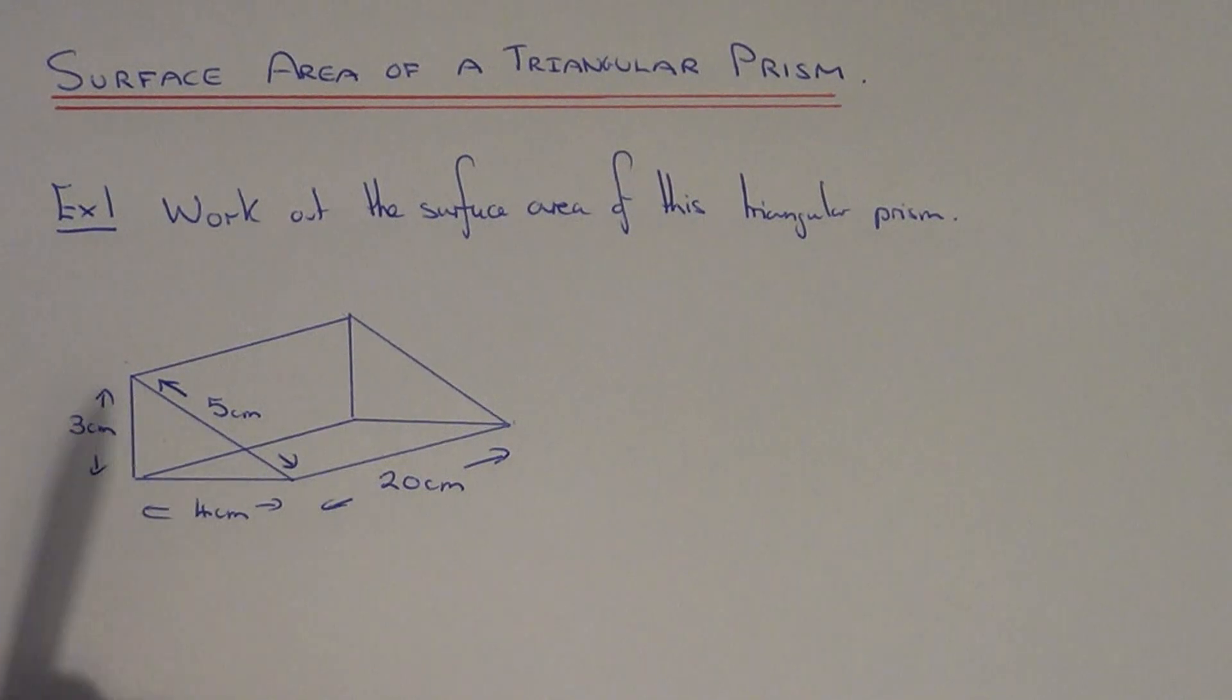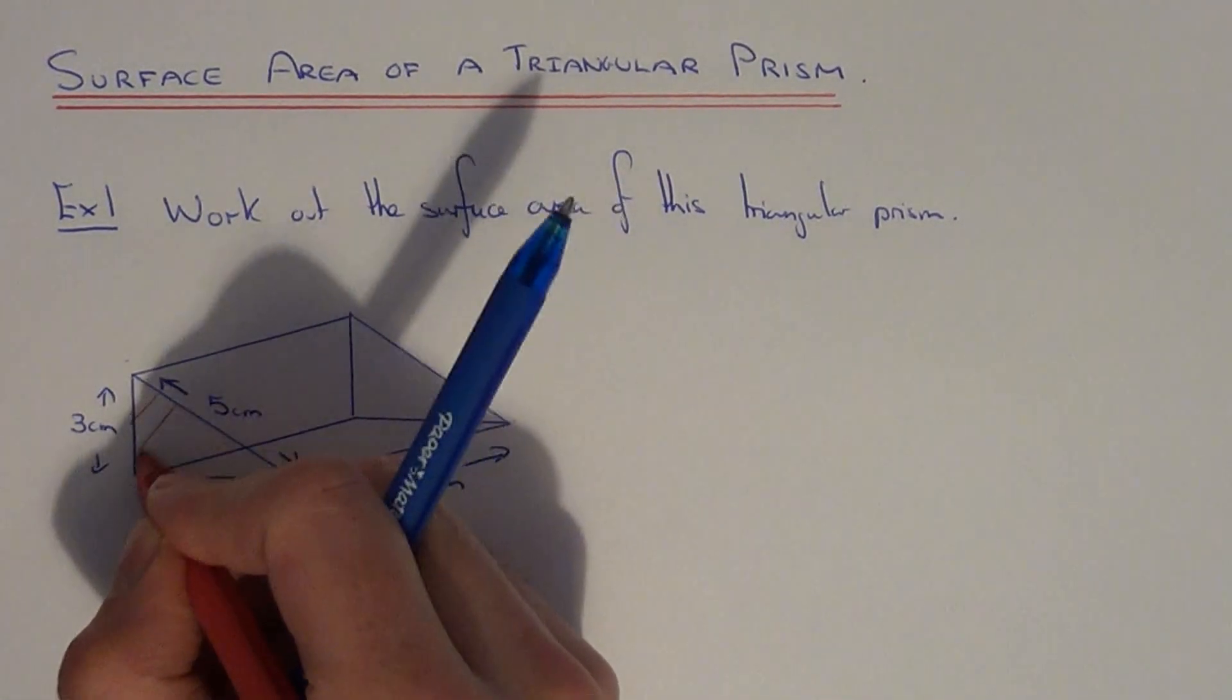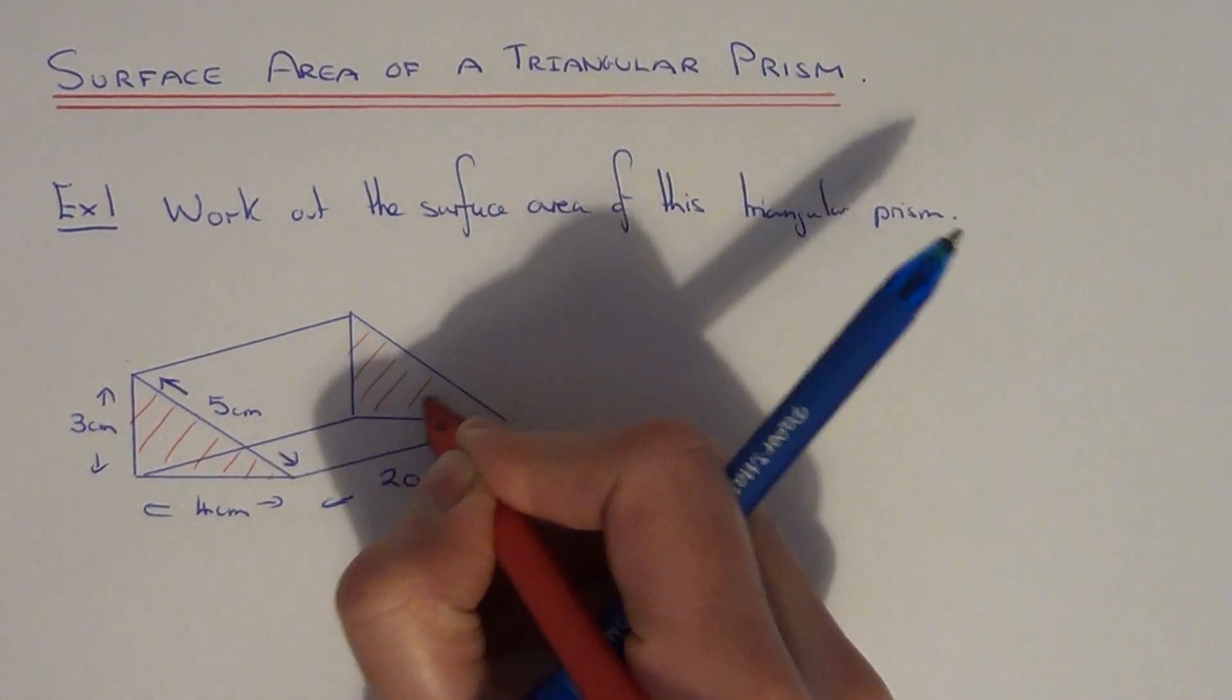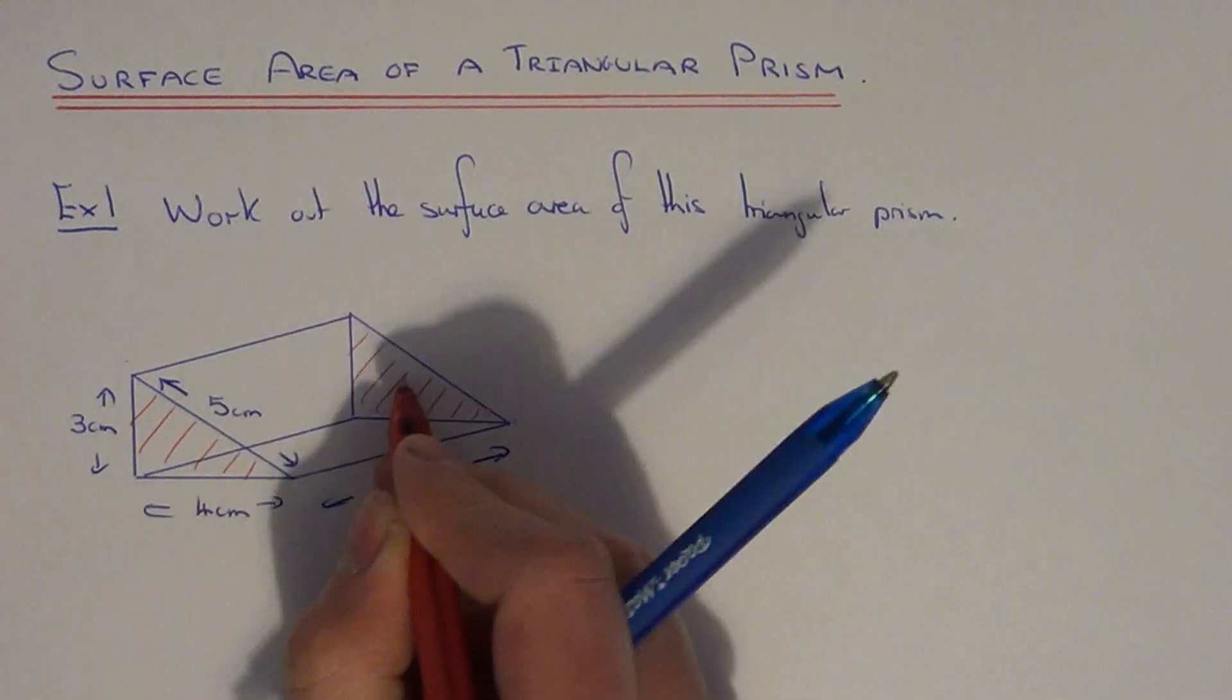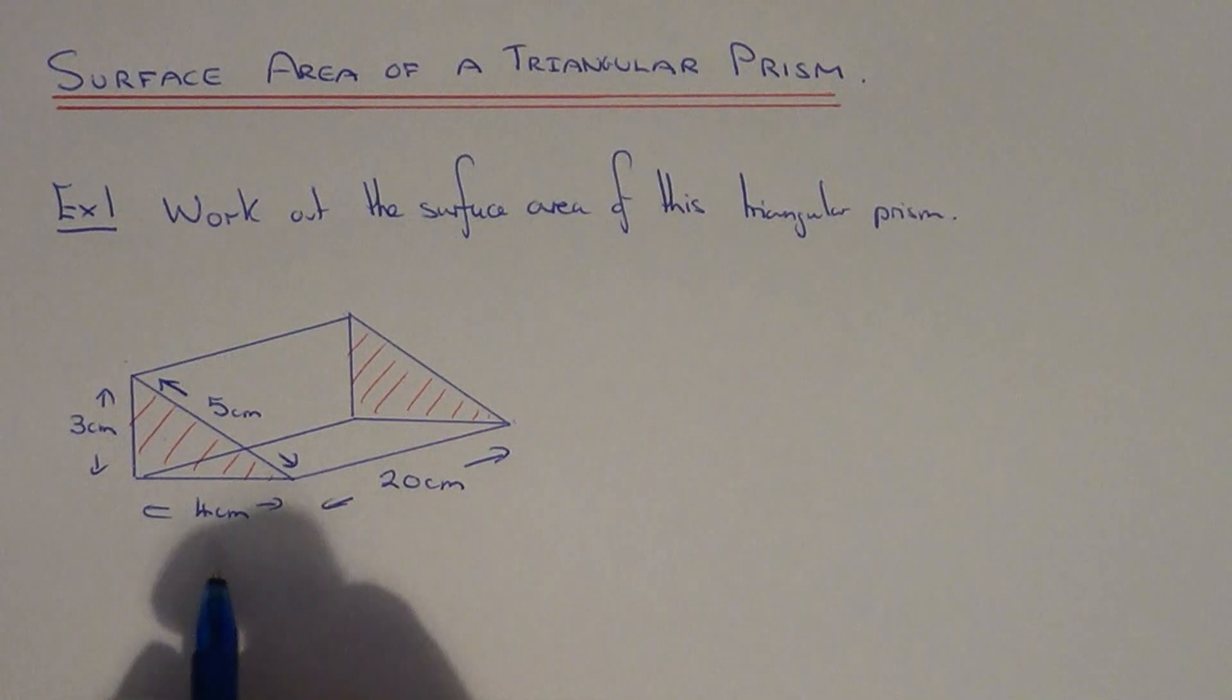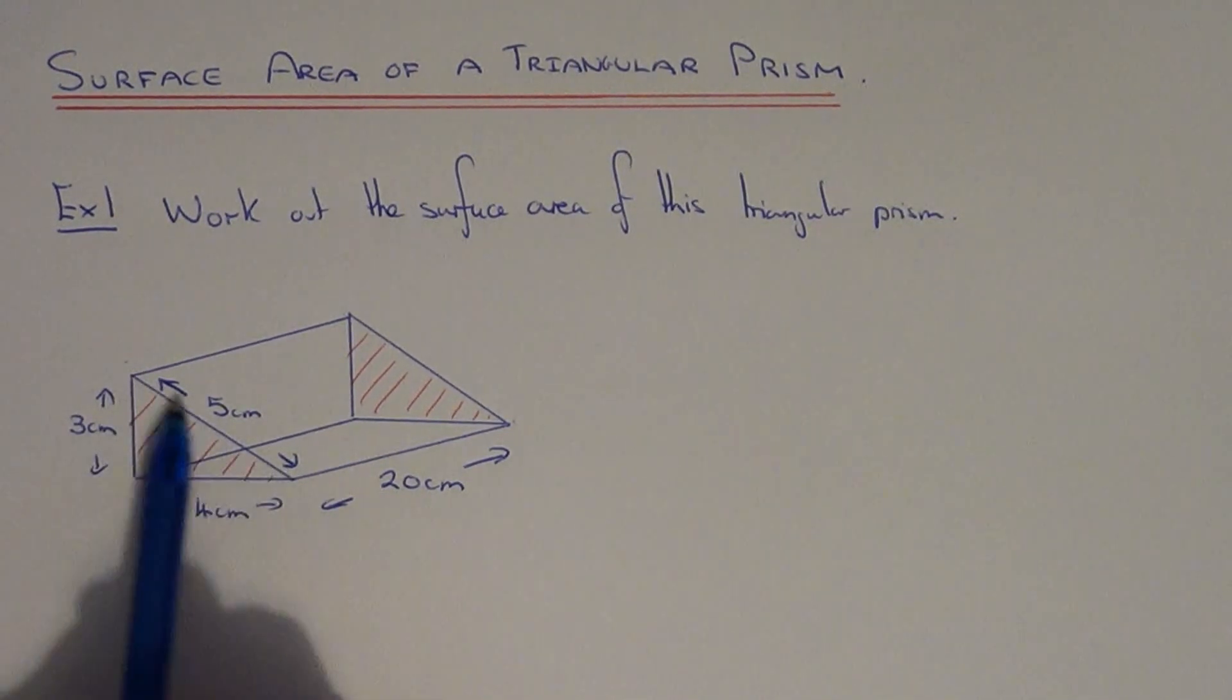So let's begin by working out the area of the triangle at the front of the shape and the back of the shape. These two faces have the same area because it's a prism. So to work out the area of a triangle you do base times height divided by 2. Make sure you use the vertical height and not the sloping height of the triangle.